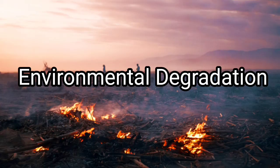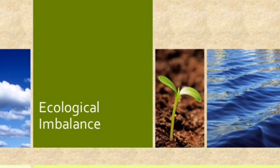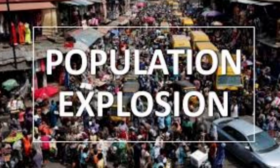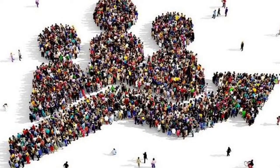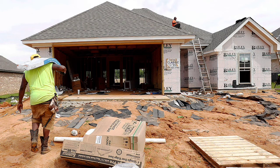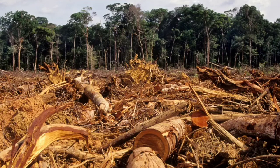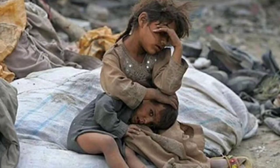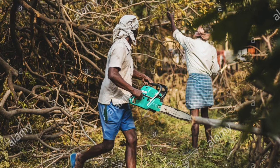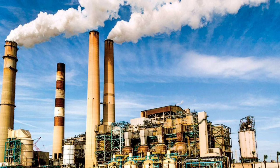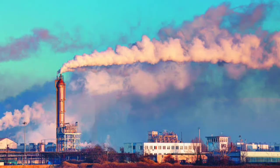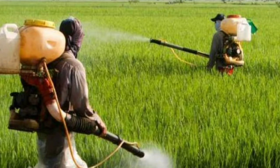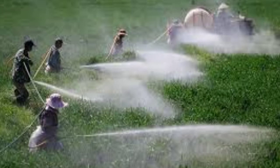Environmental degradation refers to degradation of resources which creates ecological imbalances. The causes include: first, population explosion — due to increasing population, land is greatly exploited as people build houses and cut trees and forests. Second, increase in poverty — a large section of the Indian population is poor and these people cut trees to earn their living. Third, increasing industries contribute to air, water and noise pollution. Fourth, increasing use of chemical fertilizers, insecticides and pesticides is harmful for the environment and contributes to environmental pollution.